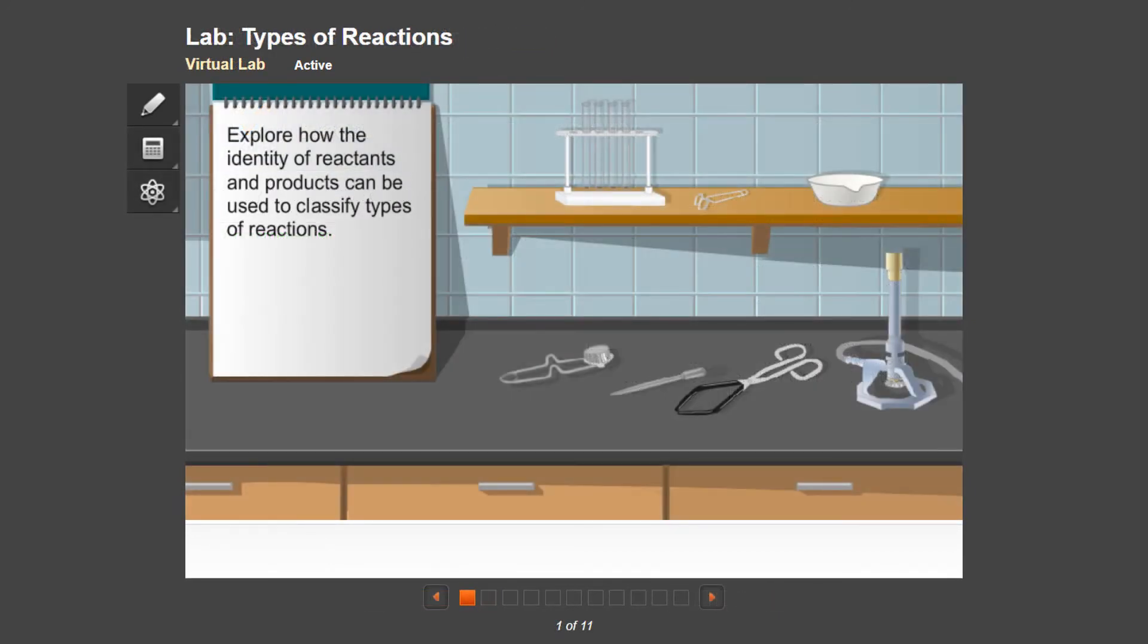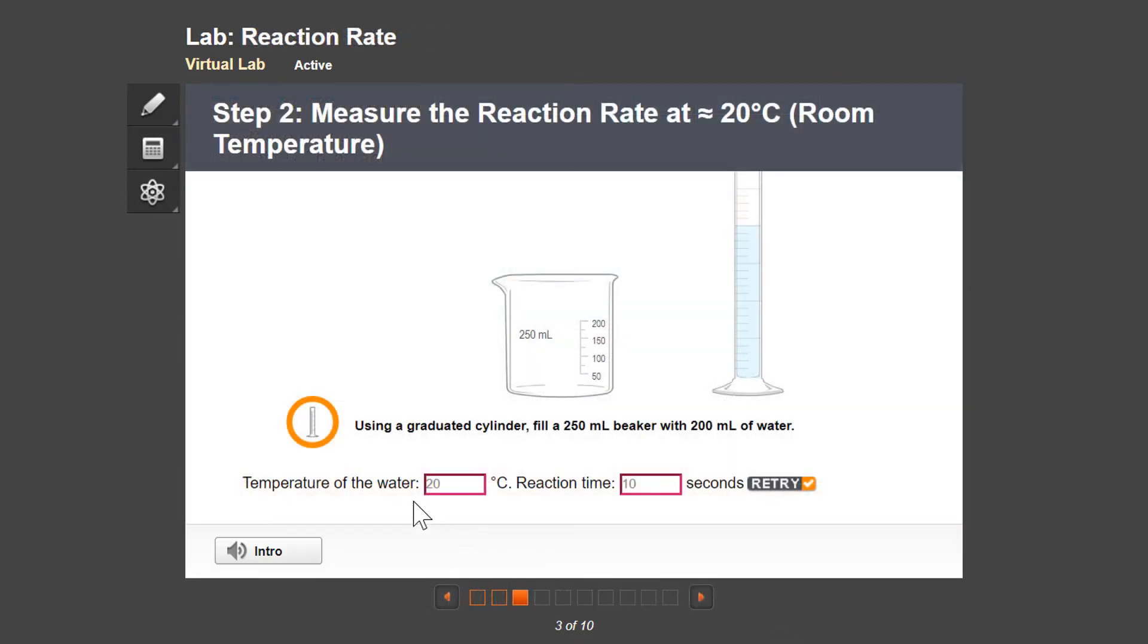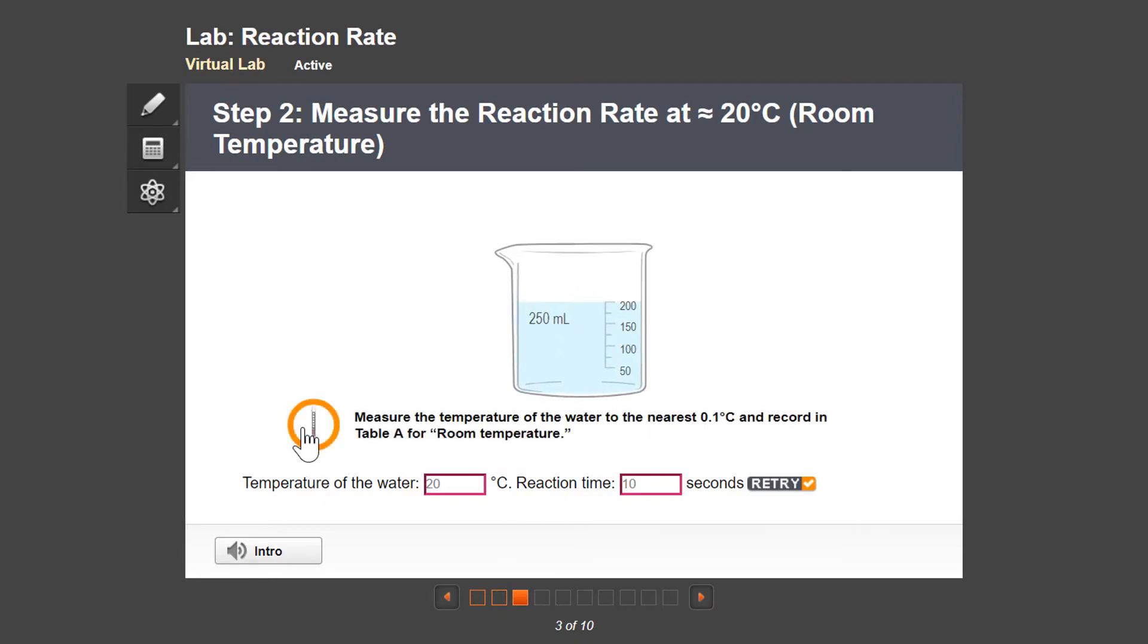At intervals throughout the science courses, there are virtual lab lessons like this one in the chemistry course. During this virtual lab, students will identify the reactants and products of a reaction. They will also write balanced equations for the reaction and use the data to classify it.